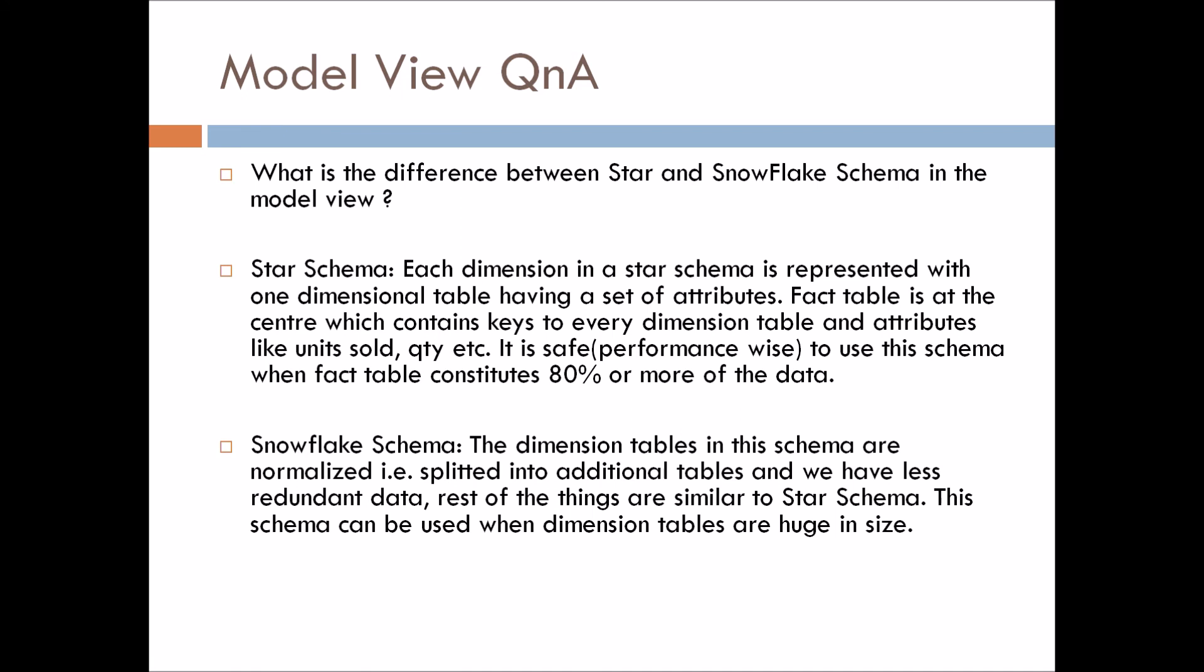Now where does snowflake schema come in? The dimension tables in this schema are normalized, that is split into additional tables, and we have less redundant data and rest of the things are similar to star schema. Basically, what happens in snowflake schema is whenever our dimension tables are very huge, we should normalize it so that we can split it into some different tables and the overall efficiency or performance of the model increases. So for that we use snowflake schema, and this schema can be used when dimension tables are very large as I have told earlier.